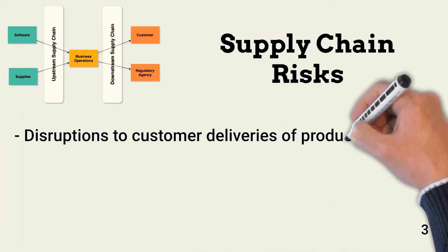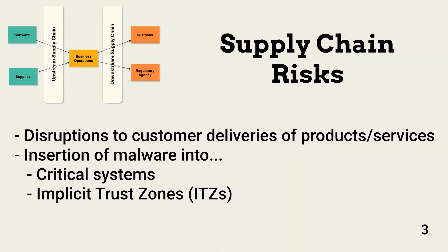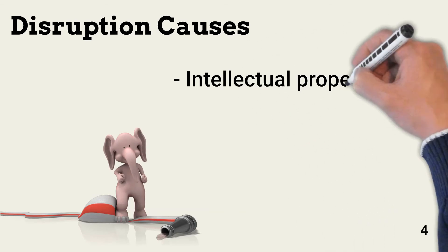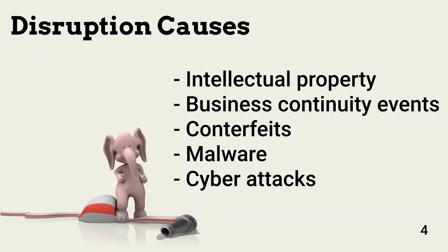At a high level, upstream supply chain risks include disruptions to delivery of products and services and the insertion of malware. Supply chain compromises can enable attackers to bypass all controls and infect critical systems in implicit trust zones. Supply chain disruptions are caused by the same threats that affect all organizations: theft of intellectual property or trade secrets, business continuity events, counterfeit components inserted somewhere in the supply chain, and malware and other cyber attacks against providers.